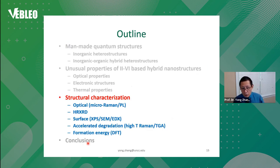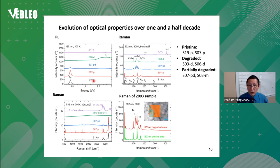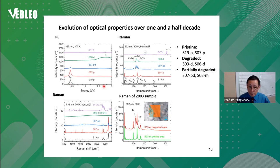Now I'm going to the structural characterization — these are the most recent work. We measured a whole set of samples as old as made in 2003 and some made in 2019. The sample numbers indicate when they were made: '19' means made in 2019, '06' means made in 2006. P stands for pristine, D stands for degraded, and PD stands for partially degraded.